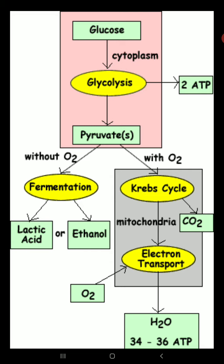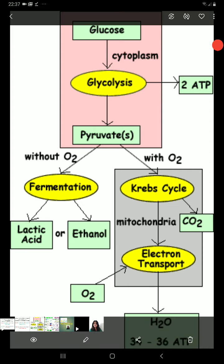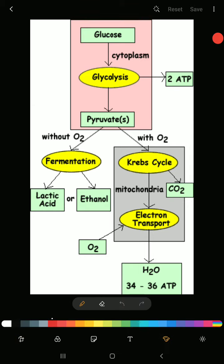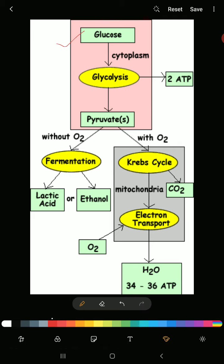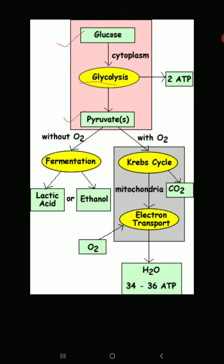Glucose breakdown happens in the cytoplasm of the cell. Glucose is broken down into pyruvic acid (pyruvate), and the process of conversion of glucose into pyruvic acid is known as glycolysis.